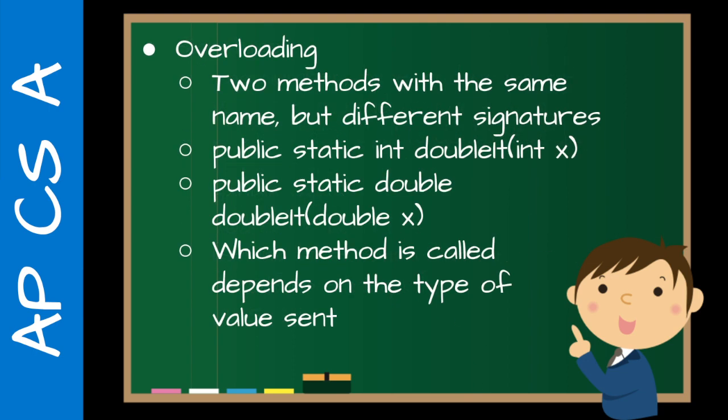Overloading. This is an important concept as well. It's kind of related to what we just saw. So if you have a signature, it's two methods with the same name but different signatures. So based on the values that are sent, the method that's called changes.